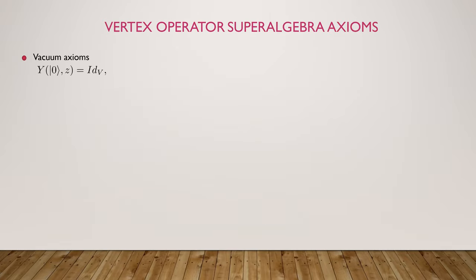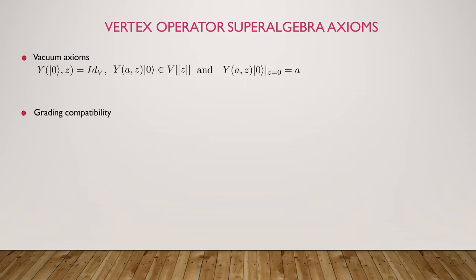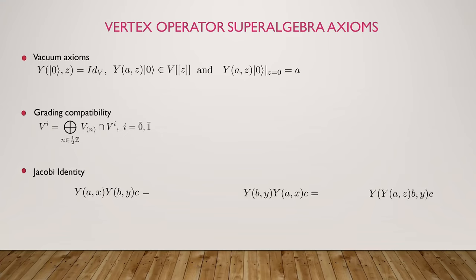It satisfies certain axioms. The vacuum axioms say we send the vacuum to the identity map, and if you evaluate any vertex operator in the vacuum you end up with only positive powers of Z; evaluating at Z equals zero recovers the original element. We require grading compatibility and the Jacobi identity, which looks like the Jacobi identity for Lie algebras — taking the difference between two operators — except there are delta corrections describing expansions of the same meromorphic function in different complex domains, and because we're in the super setting there's also a sign from switching elements.